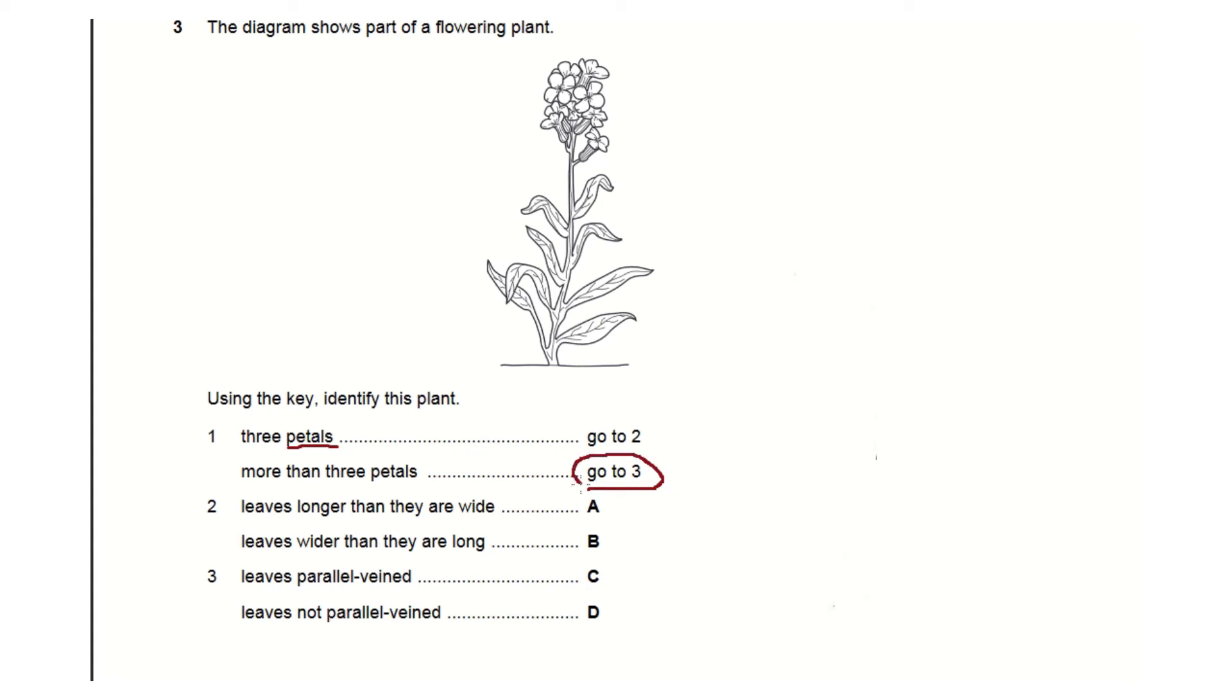So we'll go to section three, which means that everything up here we can ignore. We only have to look at section three.